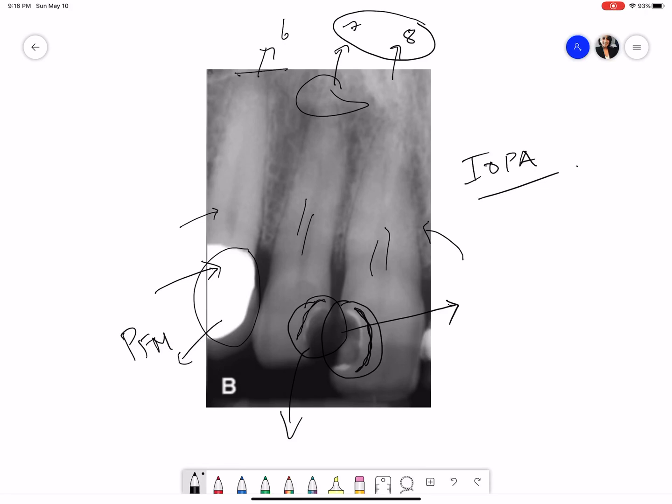my next step is to comment about any normal anatomical landmarks that might be present. I actually don't see any normal anatomical landmarks in this radiograph, although there is a small line over here which could be the floor of the maxillary sinus, but it's very subtle.